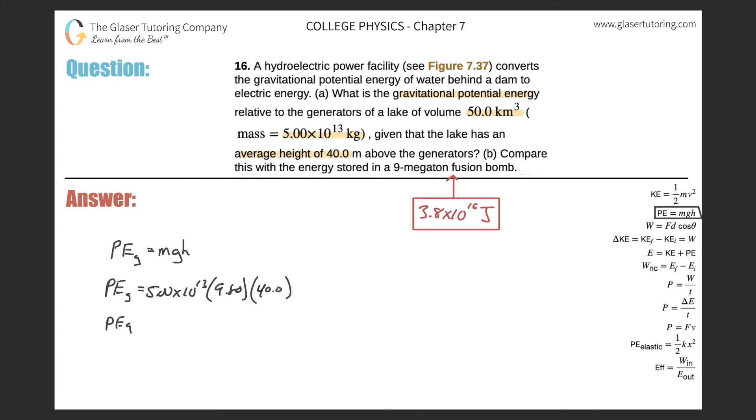And all we have to simply do is, a lot of simplies there, because it's simple. Not bad. So 5 times 10 to the 13th times 9.8 times 40, and we get a value of 1.96. So 1.96 times 10 raised to the 16. And again, it's an energy value, so it's in joules. Okay? So that would be the answer.